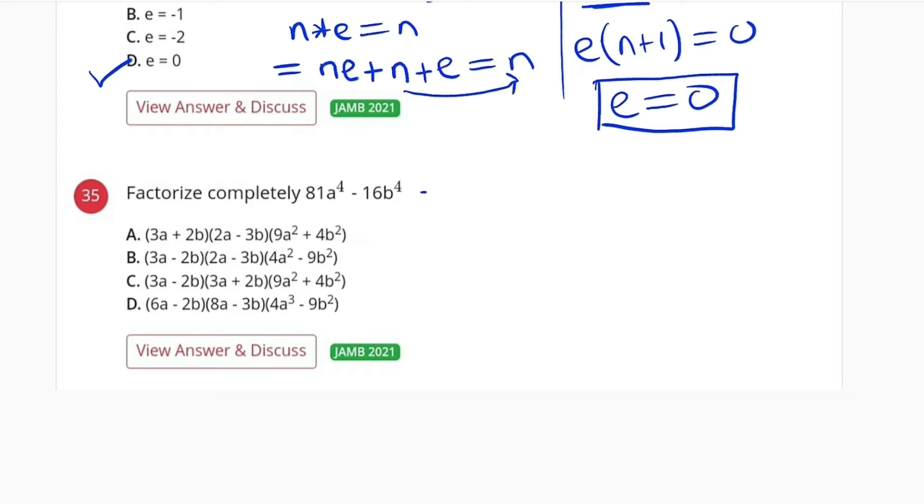So let me write it. This is the same thing as 9 squared times a, and this a to the power of 4 can be written as 2 multiplied by 2, because 2 multiplied by 2 is the same thing as 4, minus 4 squared times b to the power of 2 times 2.